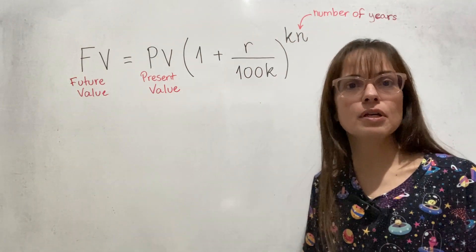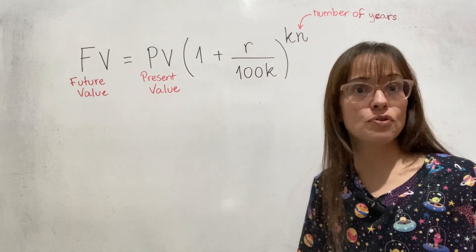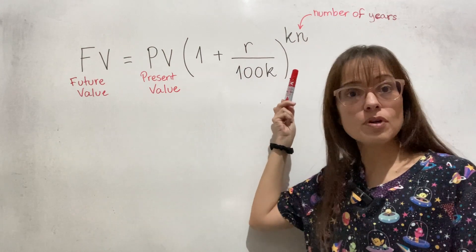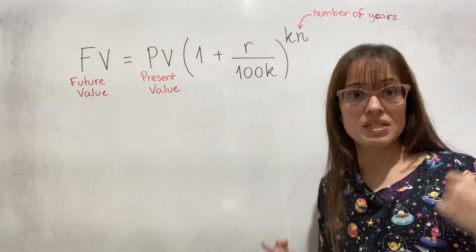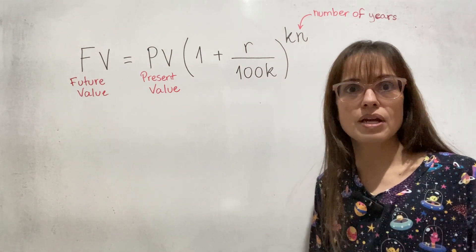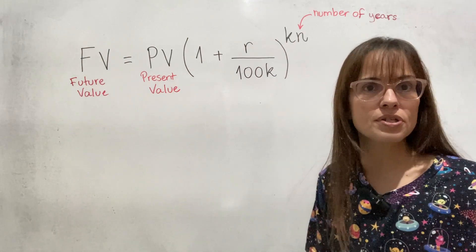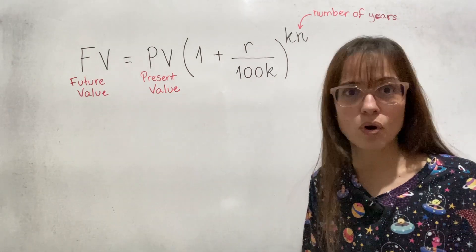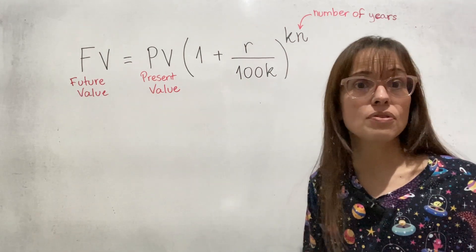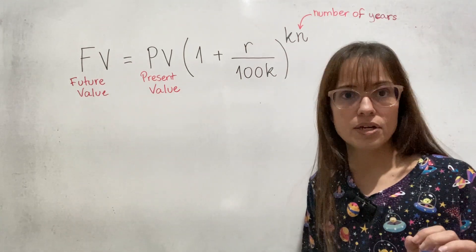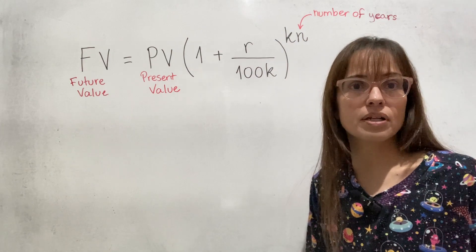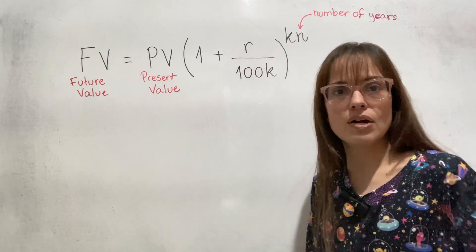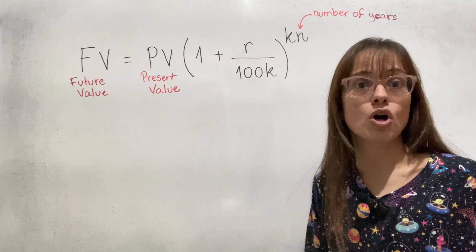Although time can be measured in quite a few units — years, months, weeks — there is a variable in the formula that is specifically for years. N is the number of years. It is not the number of months, it is not the number of quarters. It's not the number of anything except years. And this is why I like the booklet for this formula, because it says that very specifically: N is the number of years.